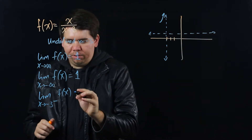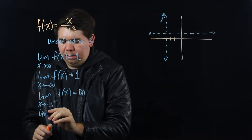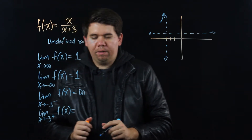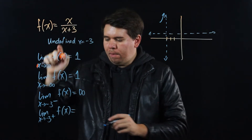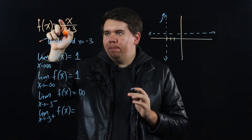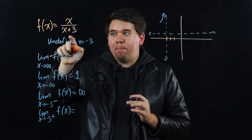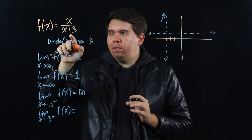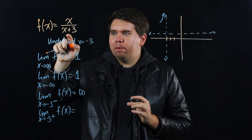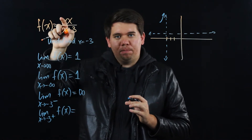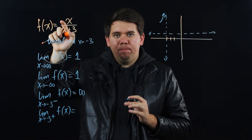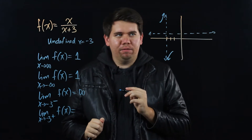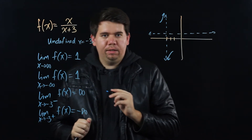As we approach x = -3 from the right, we plug in values slightly bigger than -3. The numerator is a number a little bigger than -3 (negative), and the denominator is a little bigger than 0 (positive). A negative divided by a small positive number goes off to negative infinity.